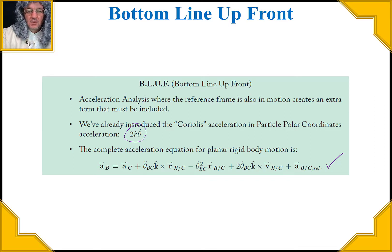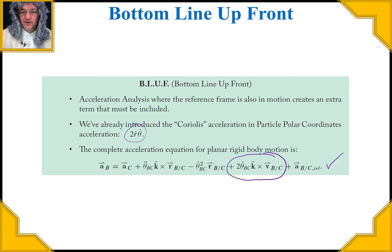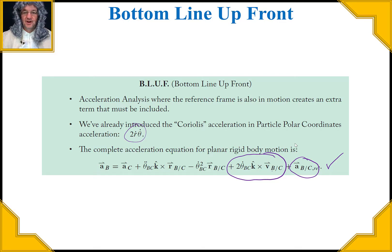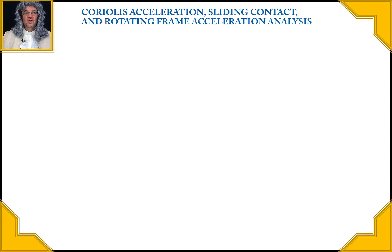If we want to write out a complete two-dimensional acceleration equation accounting for everything, we include two new terms. The first is 2·θ̇·v, where v is the relative velocity between points B and C — analogous to the ṙ term. The second is the acceleration of B with respect to C, equivalent to r̈. This closes the loop between rigid body acceleration and particle acceleration in polar coordinates.